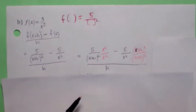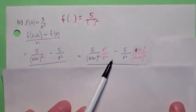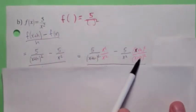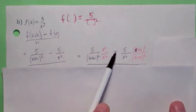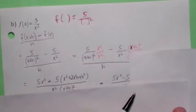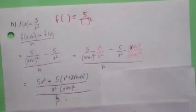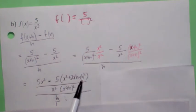And top and bottom of the second one by (x+h) quantity squared. And so the denominator of the numerator is x squared times (x+h) quantity squared, and the numerator of the numerator becomes 5x squared minus 5 times this thing. Let's do that. Let's multiply that out, and you get x squared plus 2xh plus h squared.